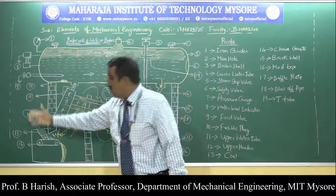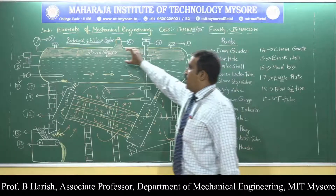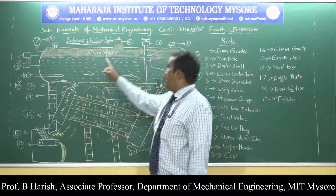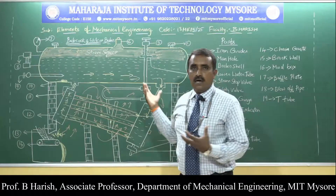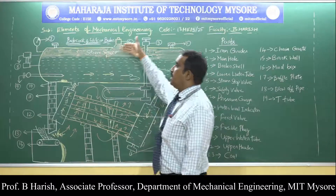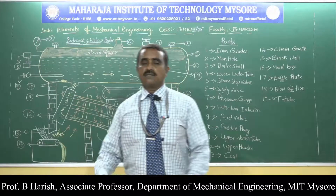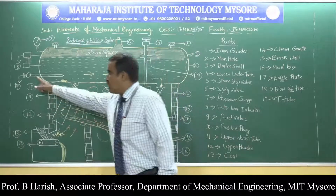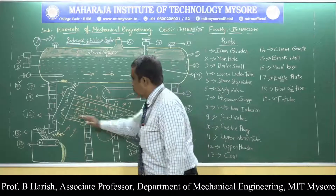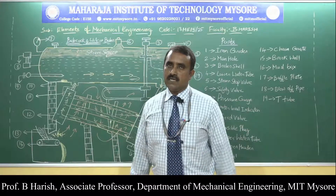Once the required steam pressure is generated, burning of coal is stopped and the steam stop valve is opened. Steam is extracted from the boiler vessel and utilized for the required application. After extraction, the valve is closed. In the second cycle, water level has decreased as some water was converted to steam, so water is fed again through the feed valve into the boiler shell. The process continues and steam is generated continuously — that is how this Babcock and Wilcox boiler works.